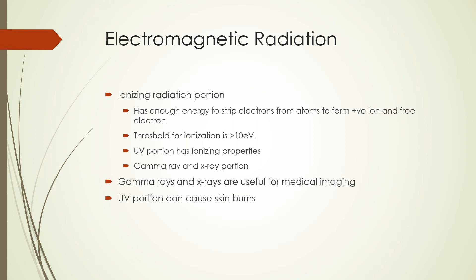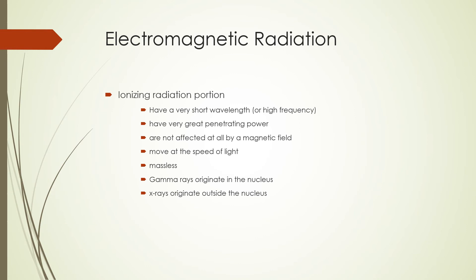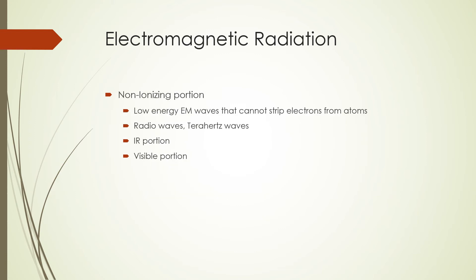The UV portion can cause skin burns. X-rays and gamma rays in the ionizing spectrum have very short wavelengths or high frequencies, very high penetrating power, are not affected by a magnetic field, move at the speed of light, and are massless. Gamma rays are the same as x-rays except for their origin: gamma rays originate in the nucleus, while x-rays originate outside the nucleus. The non-ionizing portion is characterized by low energy electromagnetic waves that cannot strip electrons from atoms. Examples are radio waves, terawaves, and microwaves. Infrared and visible portions are also part of the non-ionizing spectrum. Infrared radiation is emitted by warm and hot bodies and when absorbed causes heating.